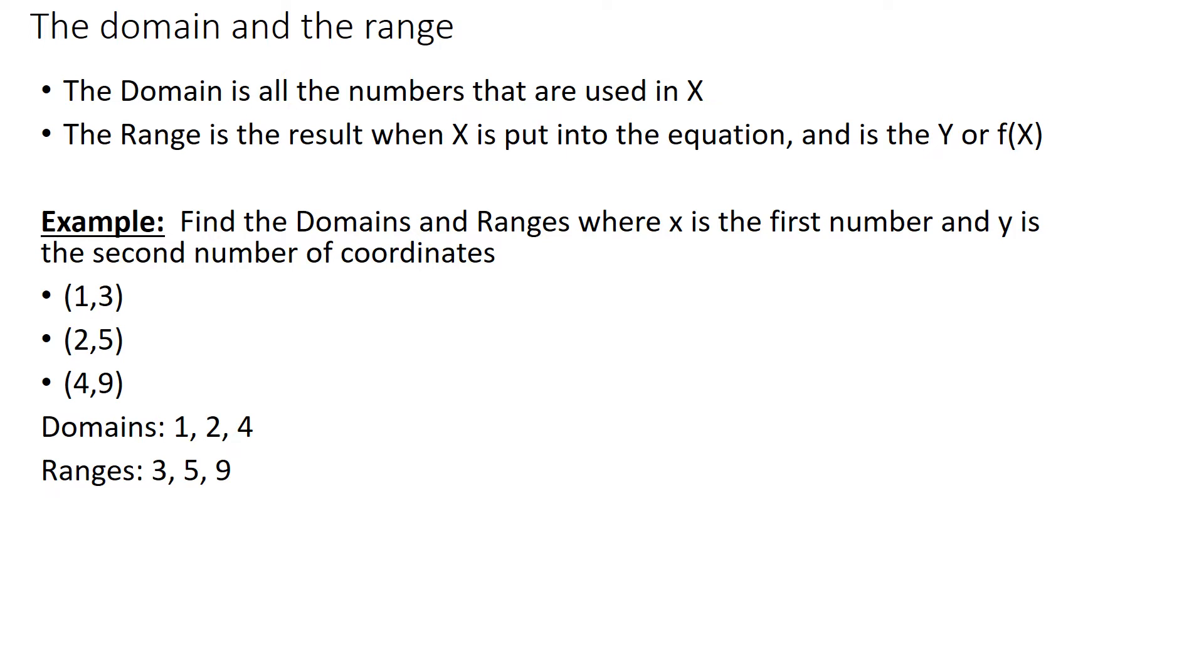Now when we look at a point on a graph, or points, we have them in parentheses, and the first one is always the x, the second one is always the y. And the x is called the domain, it dominates, it's the input. It'll determine what the y is for the range, so that's why it's called the domain, it dominates. And the range is the y.